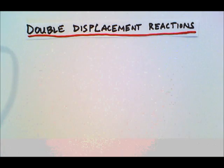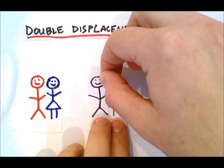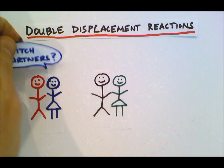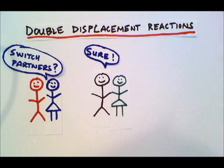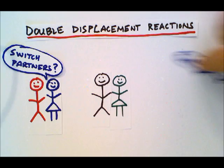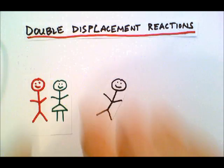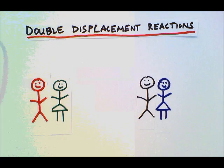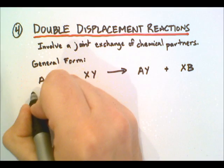Going back to our dance scenario: we've got one couple on the dance floor and another couple on the dance floor, and they switch partners. After our switch, our females are dancing with the opposite male. That's our scenario for double displacement — we're getting the switch of both compounds.